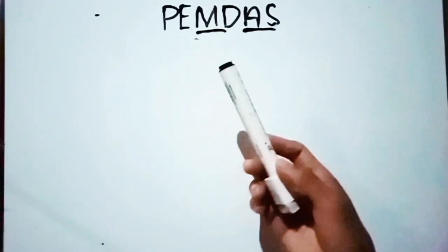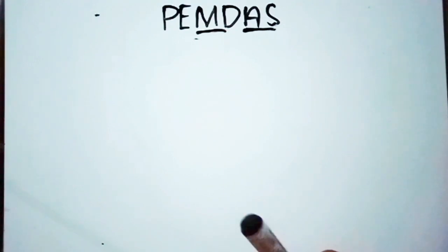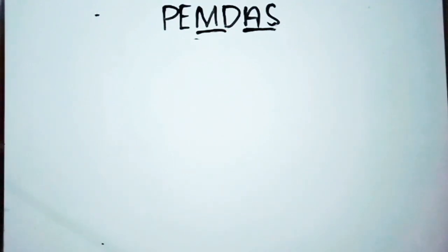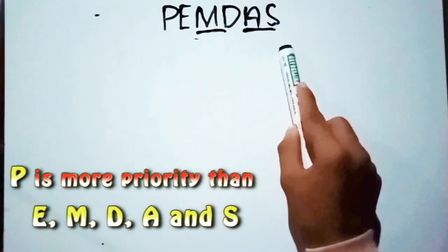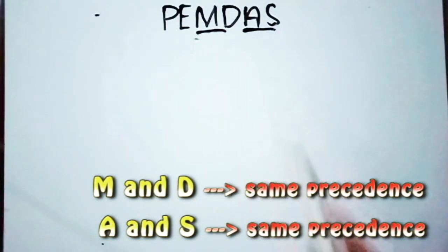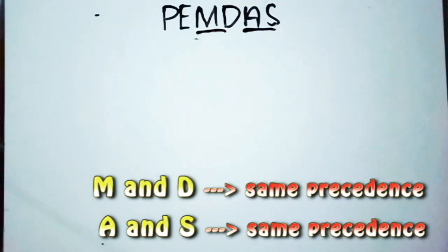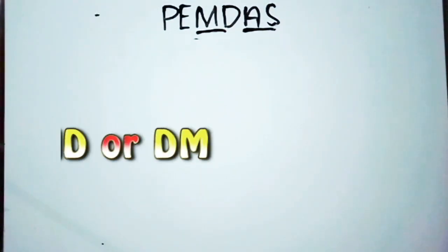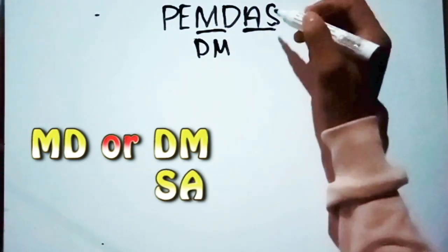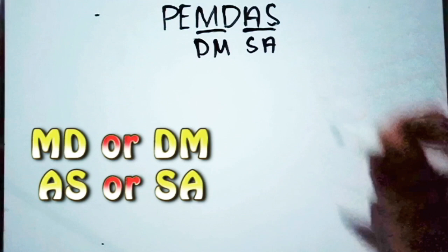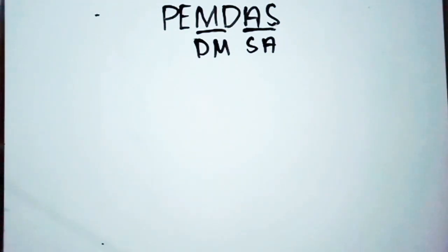So if you know PEMDAS, it will be easy for you to recognize what operations you're going to perform first. P has more priority than E, M, D, and so on. But M and D have the same precedence, so you can perform D before M. You can use this as DM.